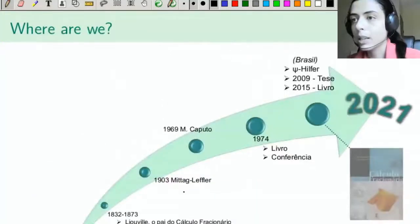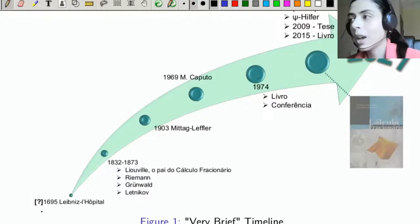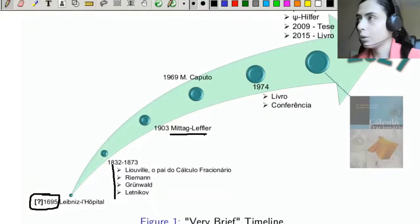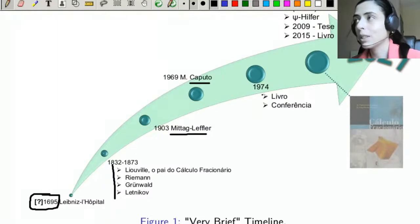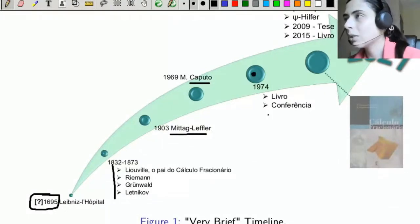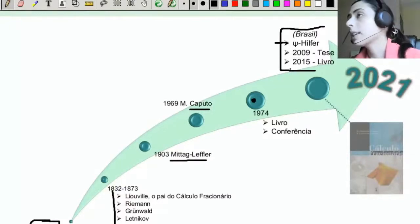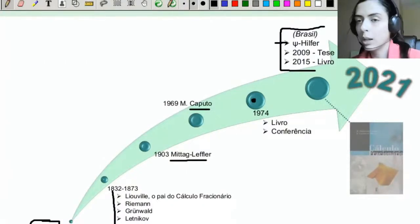Here is a brief timeline of fractional calculus. There is some divergence about its year of birth. There was a very prolific period with Liouville, Riemann, Grünwald, and Letnikov. The Mittag-Leffler function used here was introduced in 1903. In 1969 we had the introduction of the Caputo derivative, perhaps the most famous, though it will not be used in this work. In 1974, the first book and first conference entirely dedicated to fractional calculus. Since then, the number of research works in the area has been very large. In particular, in the 21st century, Brazil has been at the forefront proposing new operators. We also had the first thesis and the first book written entirely in Portuguese.